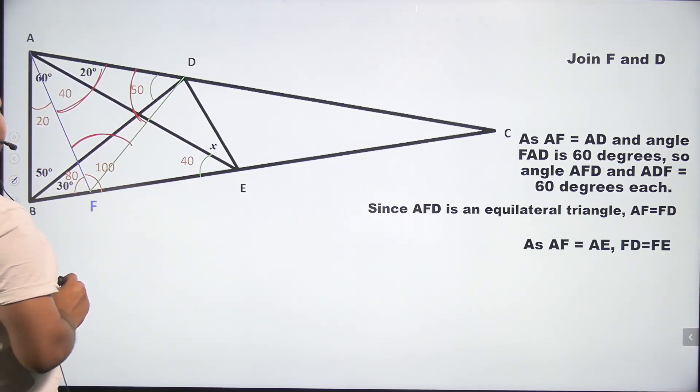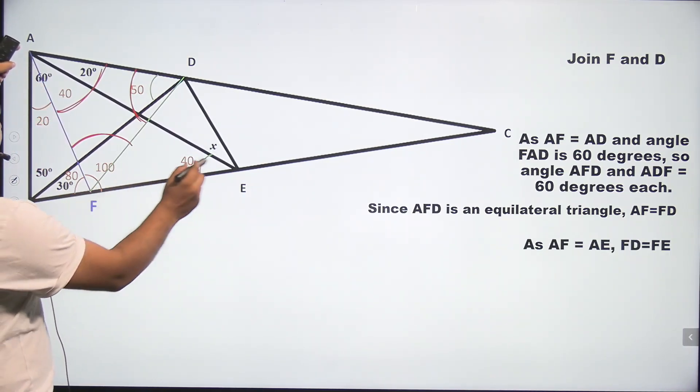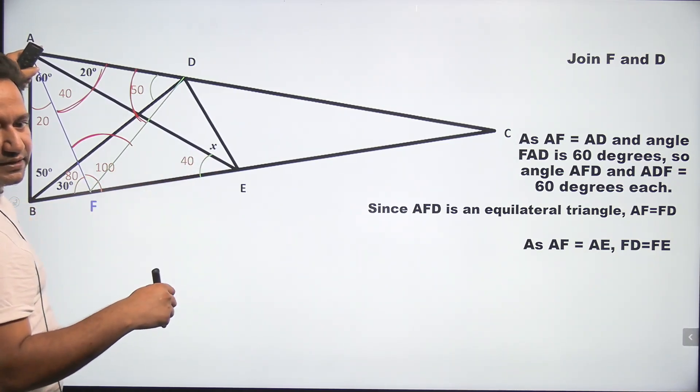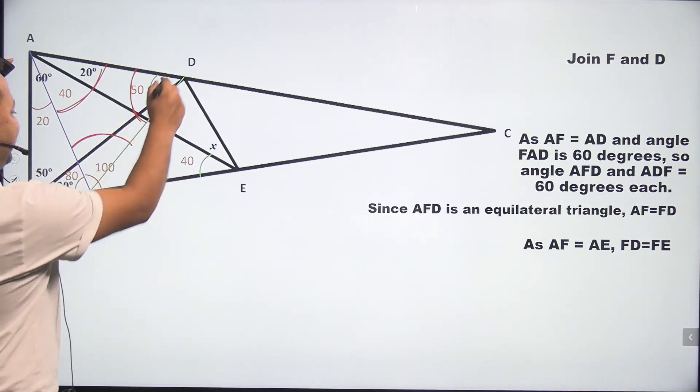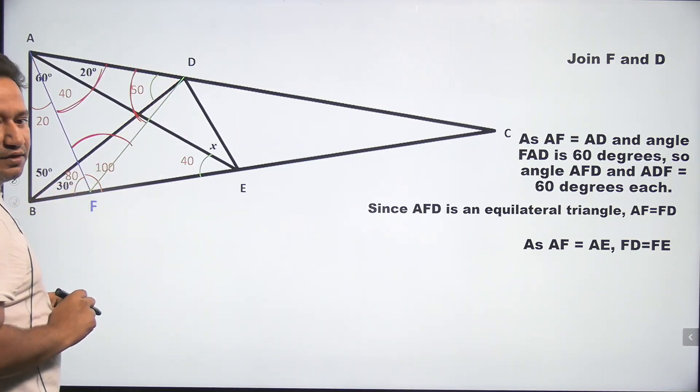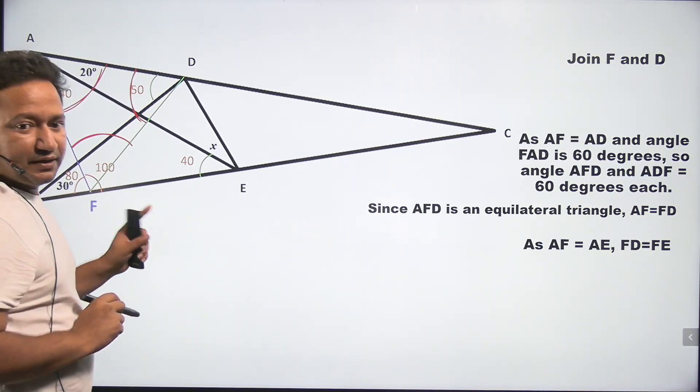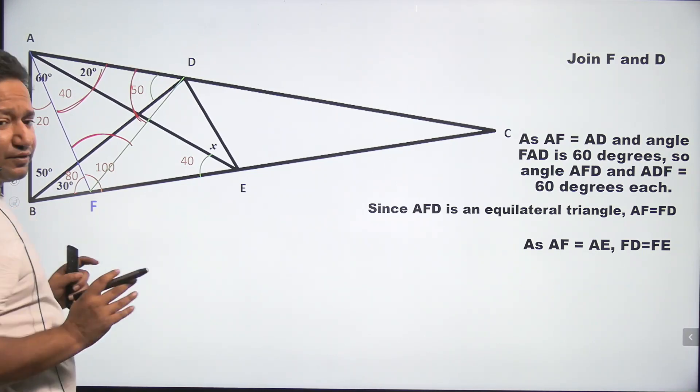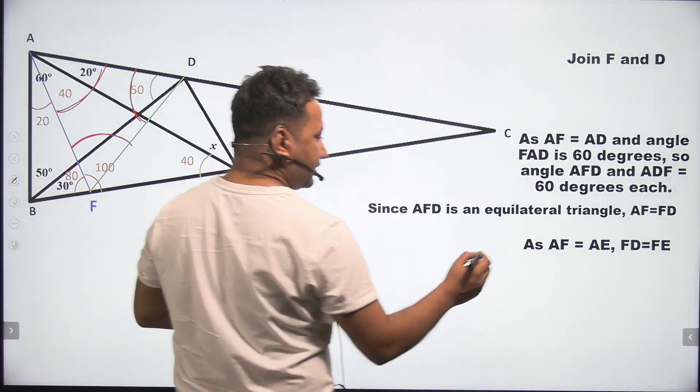As AF is equal to FE, because just look at this is 40 and this is also 40. So these two angles are 40 each. That means these two sides will also be equal. So AF is equal to FE.